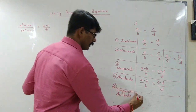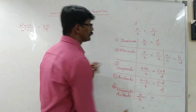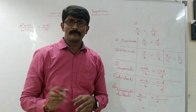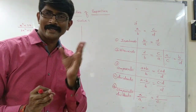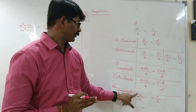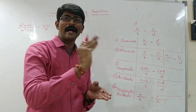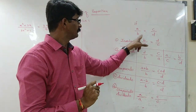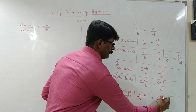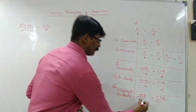For Componendo-Dividendo, I will copy this numerator two times. So: A upon A equals C upon C. I copied A two times for the numerator, and C two times on the other side. Then whatever is the denominator, I will add it in the numerator and subtract it in the denominator — plus B in the numerator and minus B in the denominator.